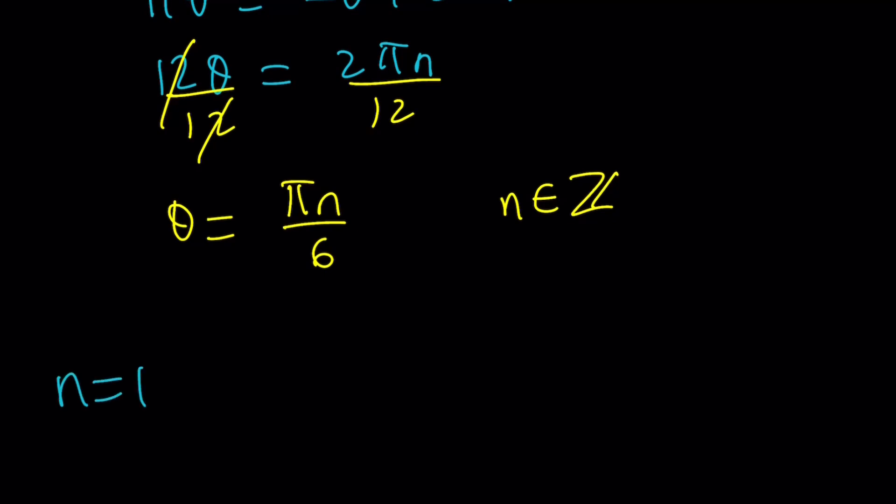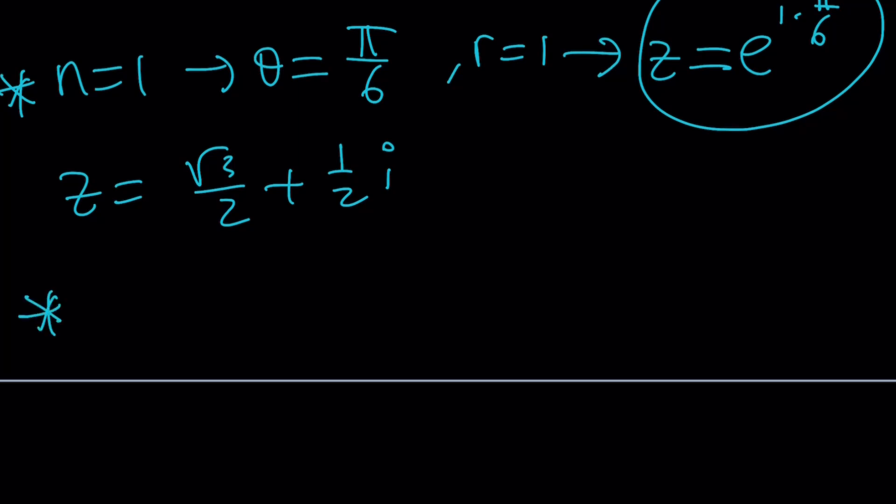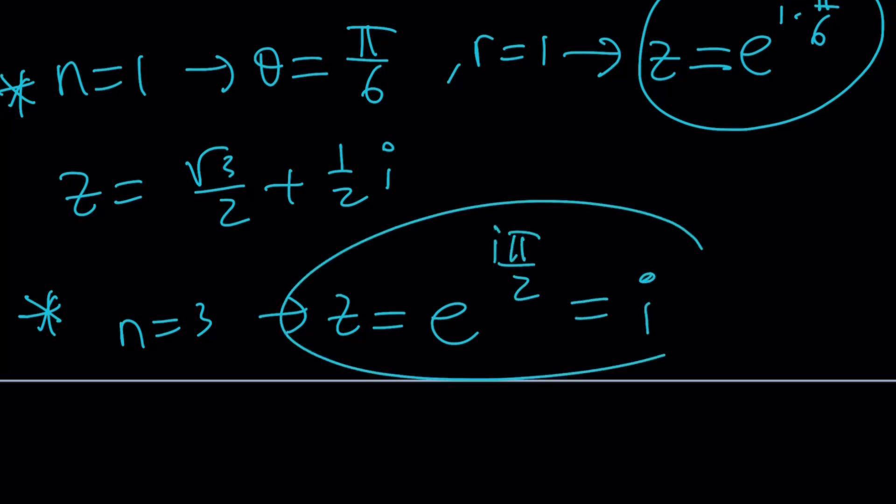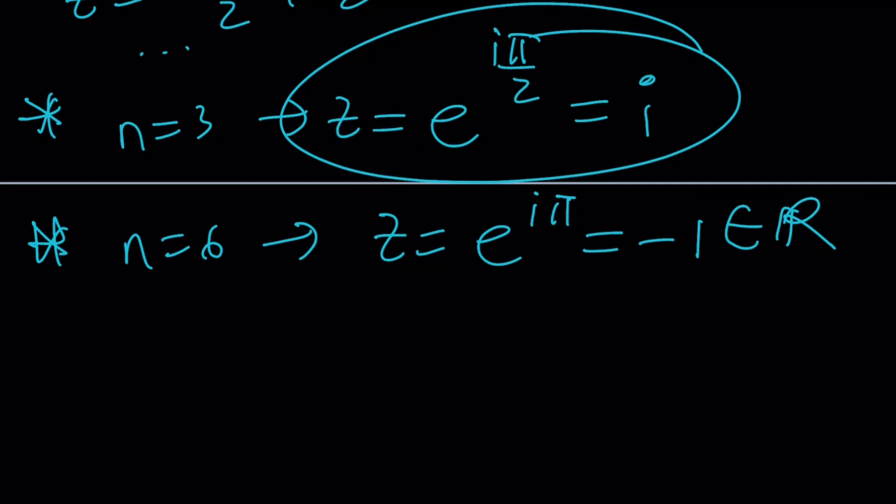So take a look. If n is equal to 1, then theta is just going to be pi over 6. And since r is 1, from here we can write our complex number z as e to the power i times pi over 6. And this is actually going to be z equals root 3 over 2 plus 1 half i in standard form. If you want to write it, you can leave it like that. That's perfectly fine. n equals 2, n equals 3 is going to produce more and more solutions. But one of the things that I wanted to get your attention on was if n is equal to 3, z is just going to be e to the power i pi over 2. And that's actually i. So that's going to be one of the solutions. Another one, of course, we have n equals 2 in the middle. And then if n is equal to 6, z is going to be e to the power i pi, which is negative 1, which is a real number. By the way, we already know that negative 1 is a solution. But we just found it one more time. And finally, if n is equal to 12, of course, there are other values, z is just going to be 1. And again, that's a real number.